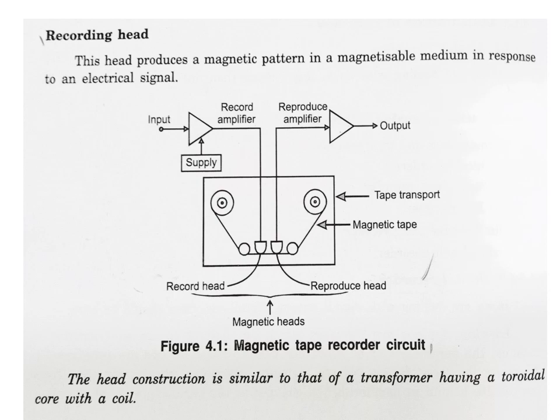Figure 4.1 shows the magnetic tape recorder circuit. Here mainly two heads are used — the one is the record head, and the other one is the reproducible head. The record head records the information and these informations are converted into magnetic patterns, created in support with the tape transport mechanism. The tape transport mechanism moves the magnetic tape in such a way that it creates a pattern based on the input the head receives.